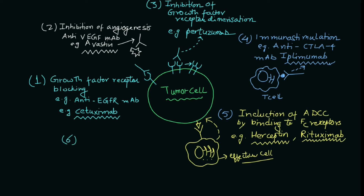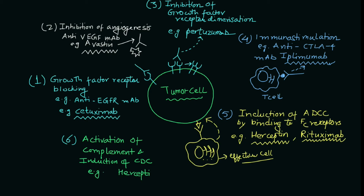The sixth mechanism is the activation of complement, which can also cause CDC — complement-dependent cytotoxicity. Examples for that are herceptin and rituximab. These two antibodies can function via both ADCC and complement induction to target the tumor cell and inhibit its growth.